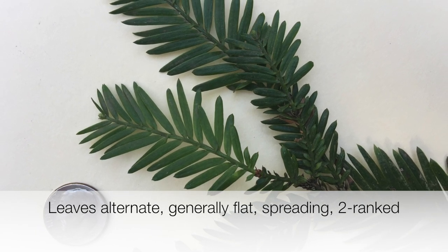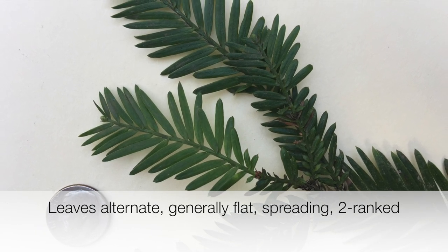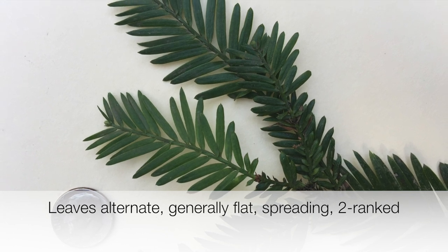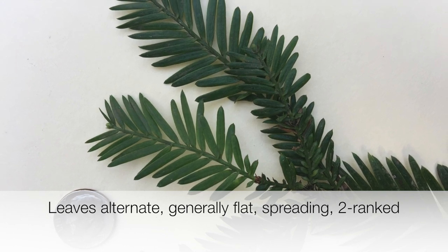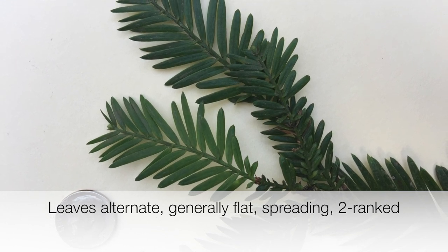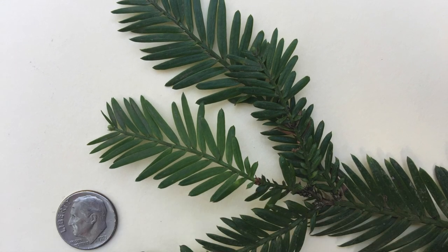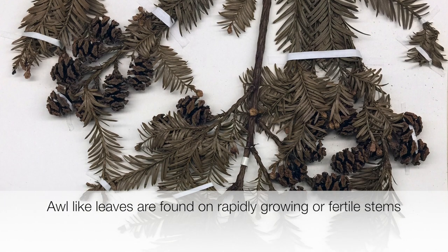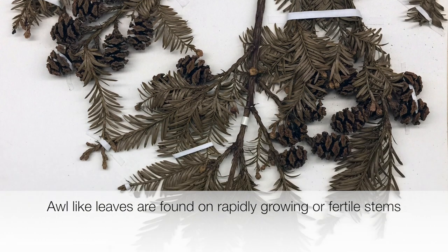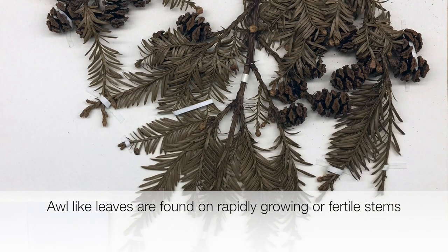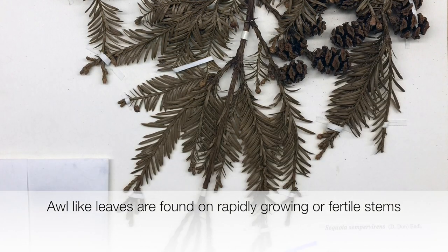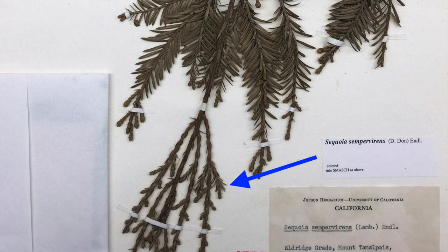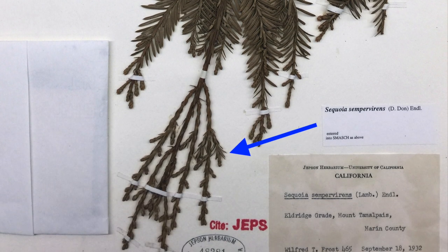There are two types of leaves. The first are generally flat, spreading, and two-ranked. All-like leaves, as seen in this specimen from the Jepson Herbarium, are found on rapidly growing or fertile stems.